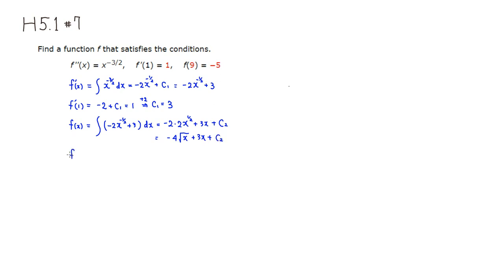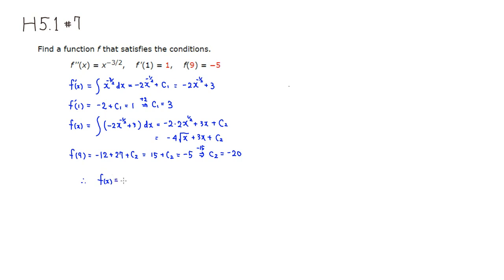Cleaning that up: negative 4 times square root of x plus 3x plus C2. Now we use the last condition: f of 9. Plugging in 9 — square root of 9 is 3, so negative 4 times 3 is negative 12, plus 3 times 9 is 27, plus C2. That gives 27 minus 12 equals 15 plus C2, and this must equal negative 5. So C2 equals negative 20.